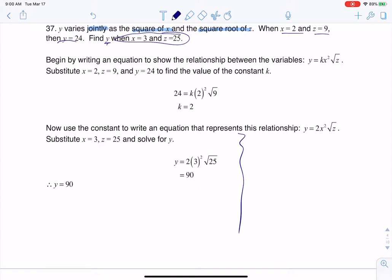So it says y varies jointly. Now if you hear 'jointly,' it's going to imply that it's multiplied unless it specifically says inversely. Because joint variation could include direct variation only, inverse variation only, or a combo.